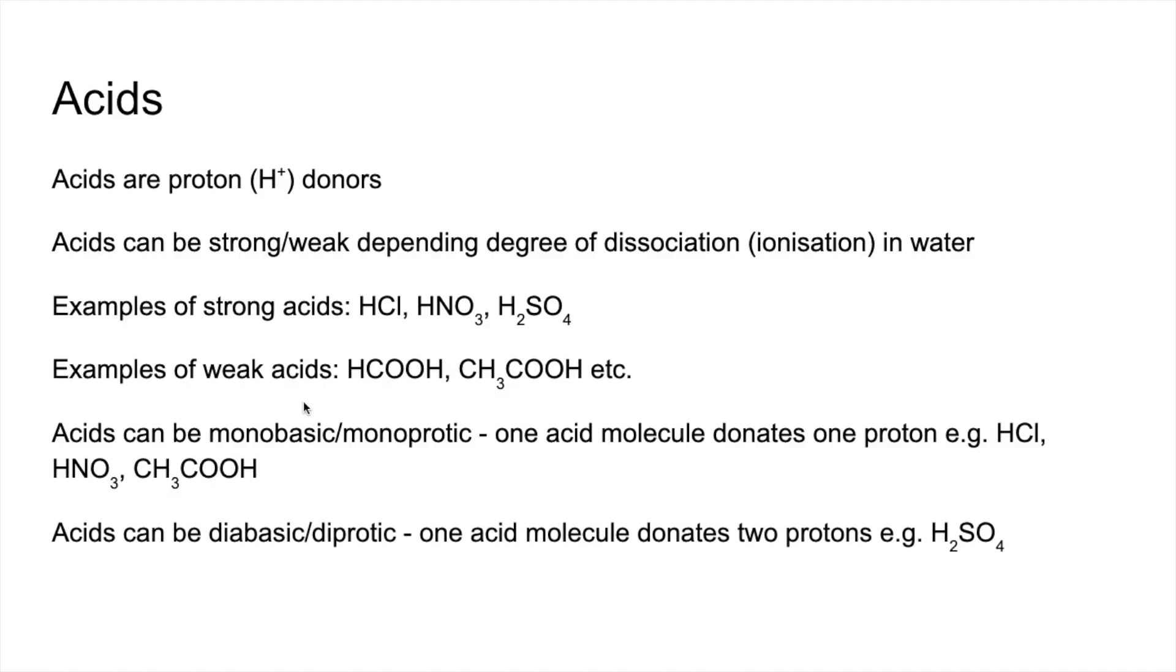They can also be dibasic or diprotic. That's where one acid molecule donates two protons. So you can see that with H2SO4 sulfuric acid. And tribasic or triprotic acids are when an acid molecule donates three protons and the example there is H3PO4 phosphoric acid.